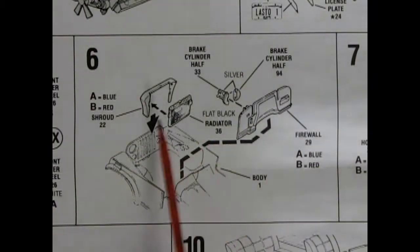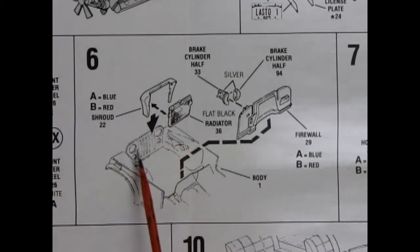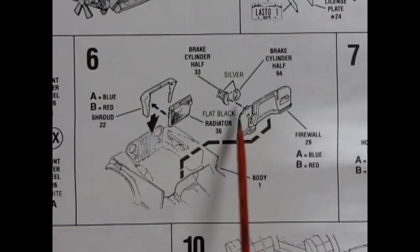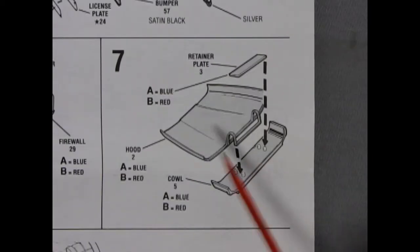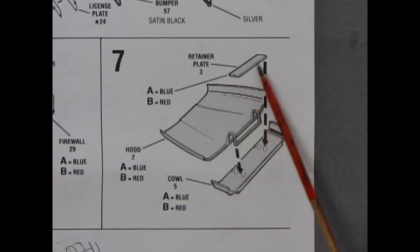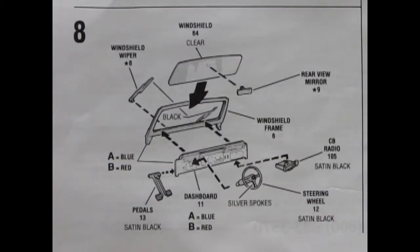Panel 6 shows our radiator and radiator shroud being glued into the front of the body, as well as the firewall and our brake cylinder. Our Jeep includes an opening hood that has a hinge on it, and this is all held into place on the underside of the cowl, with this nice retainer plate. Panel 8 shows the dashboard and windshield of our Jeep. You get these nice windshield wipers, rear view mirror, the clear windshield, pedals, dashboard, the steering wheel, and a CB radio. What else could be more 70s?